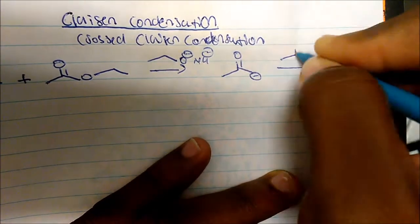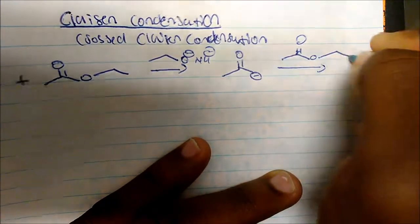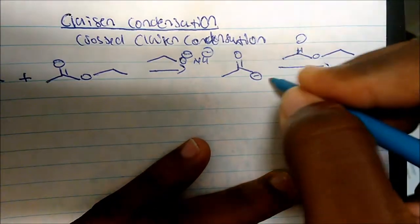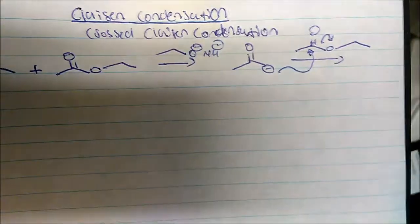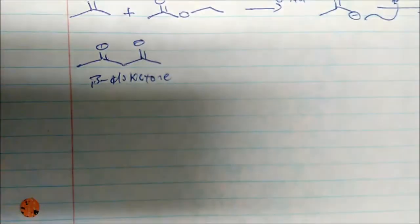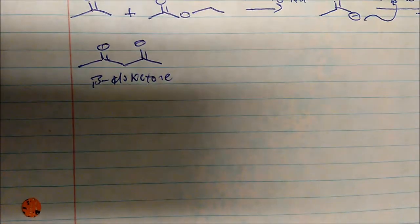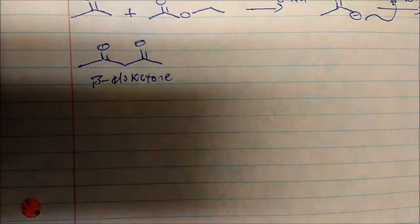And if we add this to a simple ester, what it will do is attack the carbonyl and displace the ester — displace that leaving group. And so we get this structure, which is a beta-diketone. So with Claisen condensation, all we're doing is forming beta-diketones.